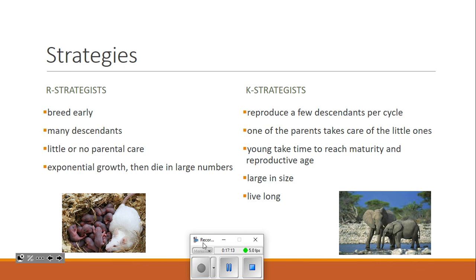A K-strategist is where I'd probably put people. But my example on the page are elephants. K-strategists will reproduce only a few descendants per cycle. So think single digits typically. I know nine seems like a lot, but that's not actually that many in the grand scheme of things. So most of the time it will be single digit numbers or really low double digit numbers. One of the parents will take care of the little ones. So sometimes it's mom, sometimes it's dad, sometimes it's both. But there's parental care. Young will take time to reach maturity and reproductive age. So I said before, if we give this description in a number of years, that is a long time. If it says it takes two years to reach sexual maturity, holy moly, that's long. I know that it doesn't seem long for people, but it's long in the grand scheme of things.